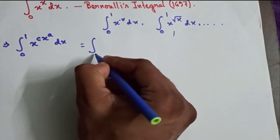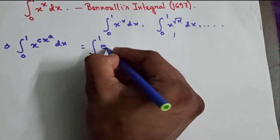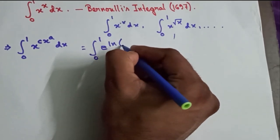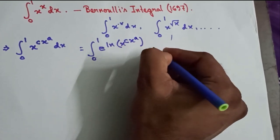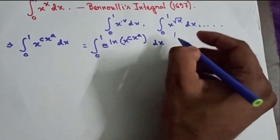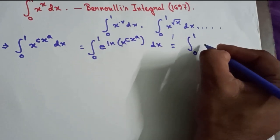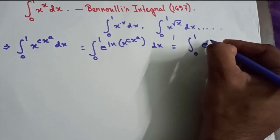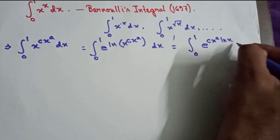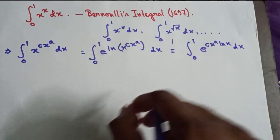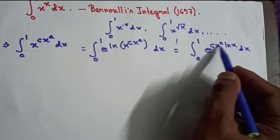To solve this, we convert the integrand using the identity x = e^(ln x), so x^(c·ln x) · x^a becomes e^(c·x^a · ln x). The integral from 0 to 1 transforms into the integral of e^(c · x^a · ln x) dx, and now we have what we wanted.